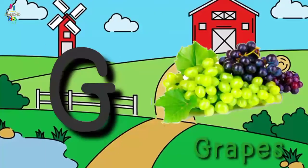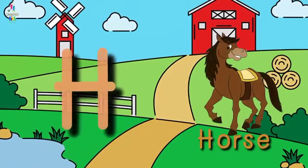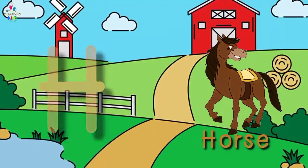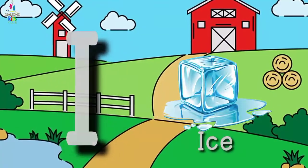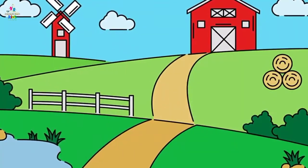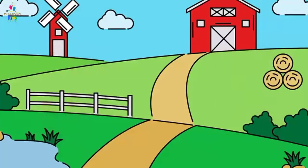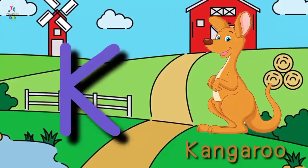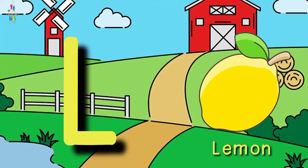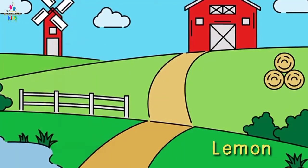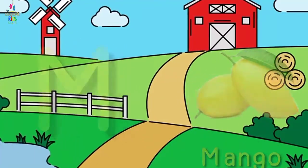G for grapes, H for horse, I for ice, J for jam, K for kangaroo, L for lemon, M for mango.